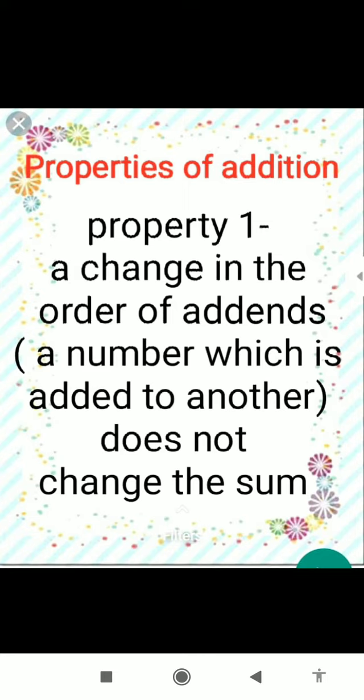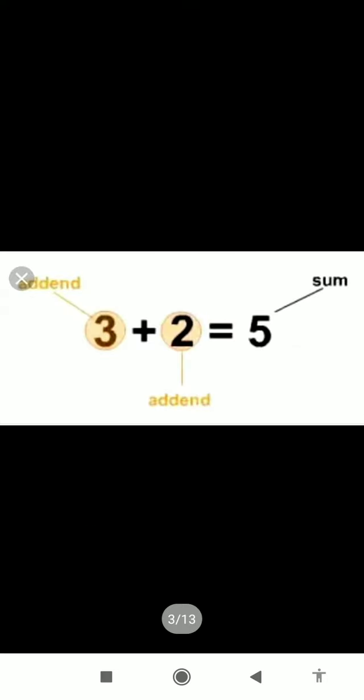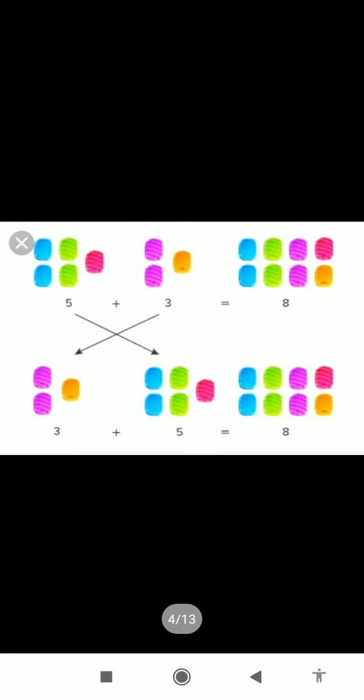It does not change the sum. For example, here we have 3 and 2. Three and two both are addends and 5 is the sum. So when we change addends like this, if you add 5 plus 3, you get 8, and when you add 3 plus 5, you also get 8.